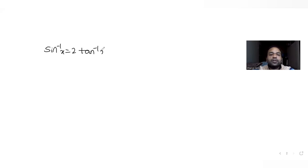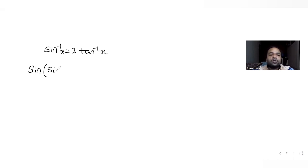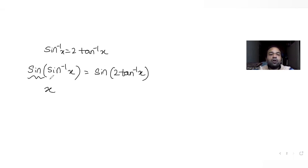Starting with sin⁻¹x = 2tan⁻¹x, to find the values of x I'll apply sine to both sides. This gives sine(sin⁻¹x) = sine(2tan⁻¹x), and since sine(sin⁻¹θ) = θ, the left-hand side becomes simply x. So x = sin(2tan⁻¹x).